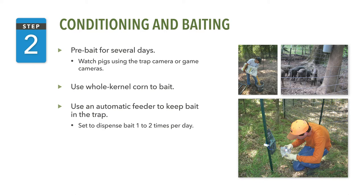Bait such as whole kernel corn is easy to work with and works well. If feral swine are not consuming whole kernel corn, you may want to experiment with other baits or scent attractants. Keep in mind, there is no best bait that should be used. Experiment and see what works best in your area. Also consider using game cameras to scout multiple locations at the same time.